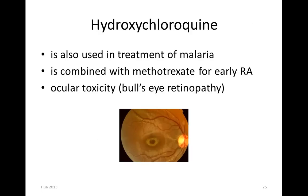Hydroxychloroquine was originally used for malaria, but was then found to have effect on rheumatoid arthritis as well, so it can be combined with methotrexate for early rheumatoid arthritis. One thing to keep in mind: hydroxychloroquine, also known as Plaquenil, can cause ocular toxicity — for example, bull's eye retinopathy, also called Plaquenil retinopathy.